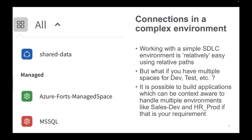In a model where we have a single development, test and production space, similar to what we showed in the previous video, it's easy to use relative connections in those spaces to ensure we always use the appropriate data connection based on the SDLC stage. But what if you have separate dev, test and prod environments for different departments? For example, Sales Dev or HR Prod. There's no out-of-the-box mechanism to handle this.